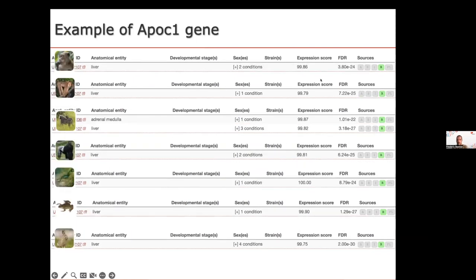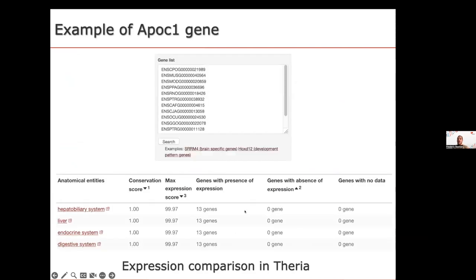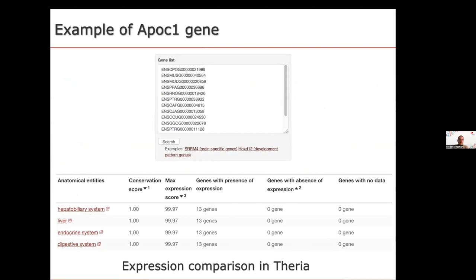We also have a tool where you can automatically compare expression between a list of genes. Here, entering the orthologous genes of Apocan in our tool, the organs identified as most highly conserved in their expression are the hepatobiliary system and liver — all orthologous genes have significant expression in this tissue. You can perform this analysis automatically without going through each gene page individually.